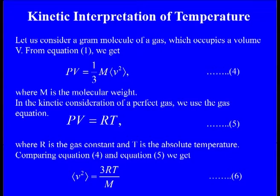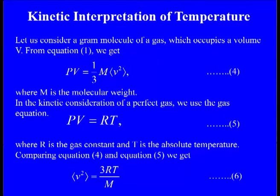Kinetic interpretation of temperature. Till now, I did not talk about the concept of temperature. Let us consider a gram molecule of a gas occupying volume V. From equation one, we get PV = one third m times V² average. In the kinetic consideration of a perfect gas, we use the experimental equation of state PV = RT, where R is the gas constant and T is the absolute temperature.